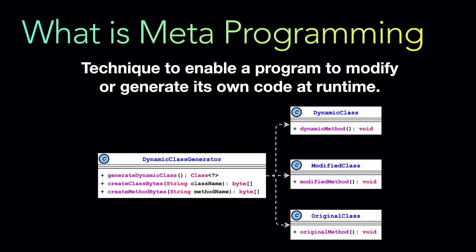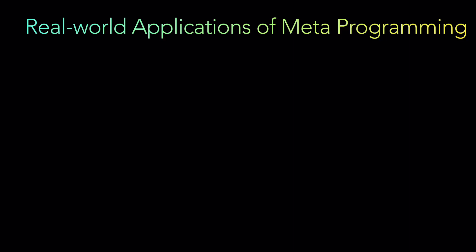Where is metaprogramming used in real-world applications? The first place is frameworks and libraries. Metaprogramming is extensively used in frameworks and libraries to provide extensibility and customization options to developers. Frameworks like Spring in Java and Django in Python use metaprogramming heavily to enable dependency injection, aspect-oriented programming, and declarative configurations, allowing developers to modify and extend the behavior of their applications.